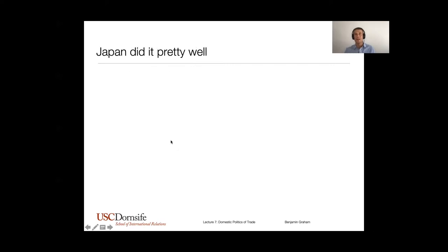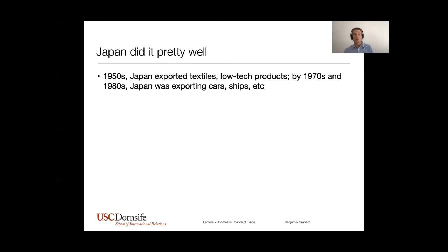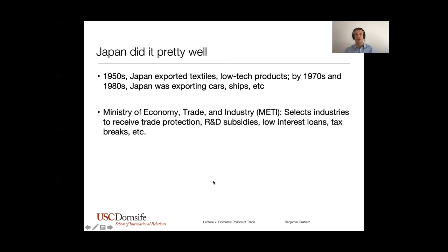We see industrial policy sometimes done really well. This is the story of Japanese industrialization in the 50s, 60s, and 70s — very active industrial policy that helped Japan move up the global value-added chain. Japan was pretty low down on the manufacturing pecking order after World War II and then rose really quickly with very active interventionist domestic policy. This was orchestrated through the Ministry of Economy, Trade and Industry, which selected industries to receive protection, gave a lot of subsidies for R&D, low-interest loans, and tax breaks to get them up and going.